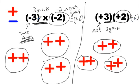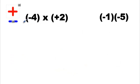So negative three times negative two makes positive six. Positive three and positive two makes positive six. Interesting. We're going to look at those quick shortcuts later on in a future lesson. But for now, understand how to represent these.